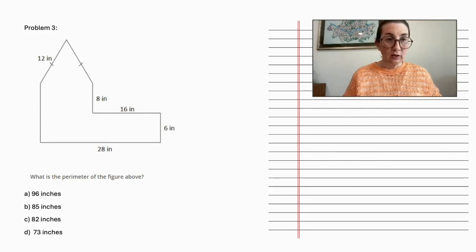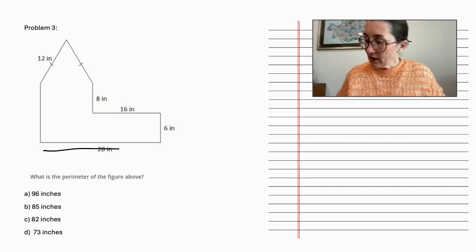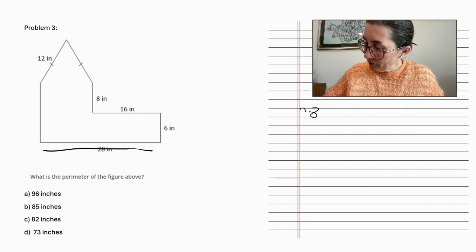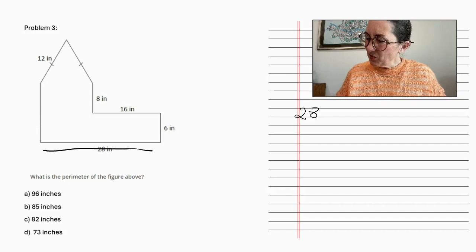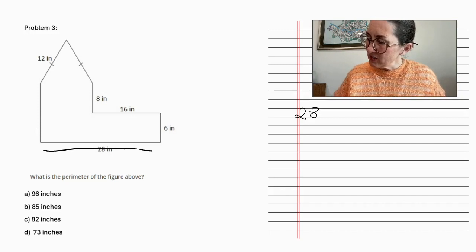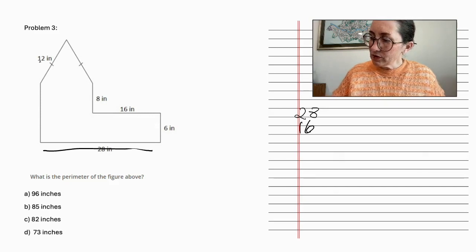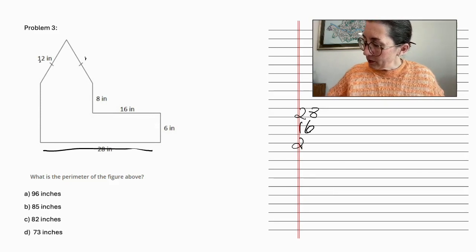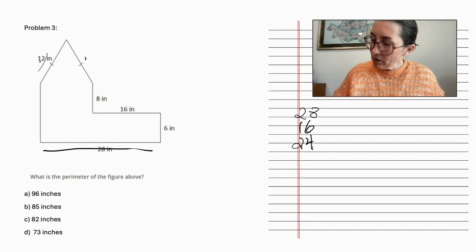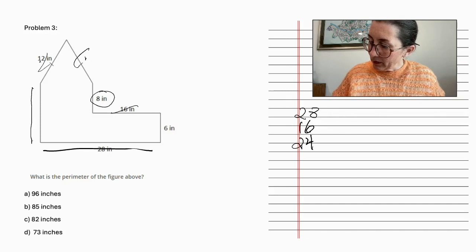So let's take a look. The longest side is 28 inches. Next, we have 16 inches here, and we have two sides that are 12 inches. I'm going to add those together to 24, so we've got those and those.